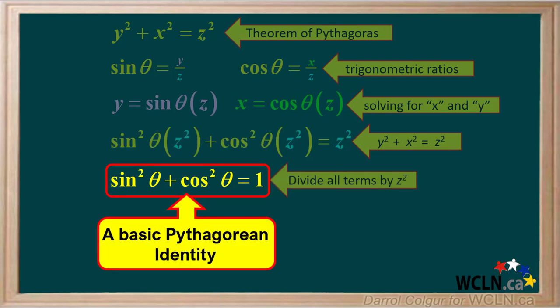sin squared theta plus cos squared theta equals 1 is a basic Pythagorean identity, which we'll be using quite a bit from now on.